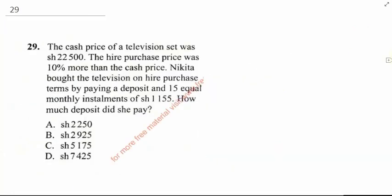Question 29: The cash price of a television set was 22,500 shillings. The hire purchase price was 10% more than the cash price. Nikita bought the television on hire purchase terms by paying a deposit and 15 equal monthly installments of 1,155 shillings. How much deposit did she pay?